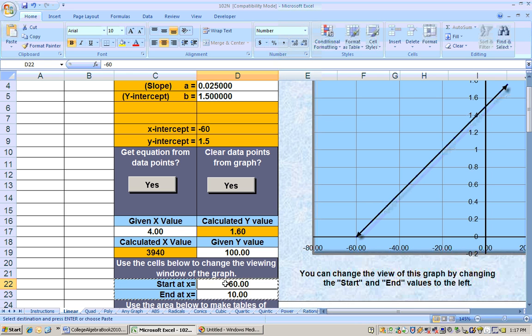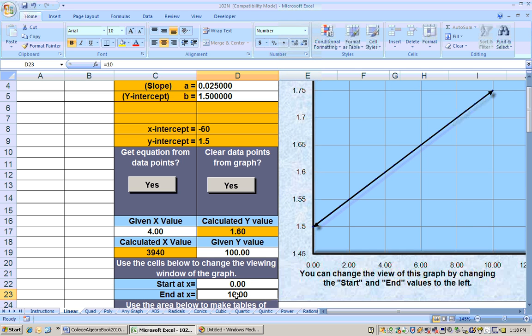And in fact, you can change any part of the graph that you want to see. You can just change the start and end values. So you can see I just changed the values here, the start and end, to be 0 to 10, and boom, I get a different section of the graph.